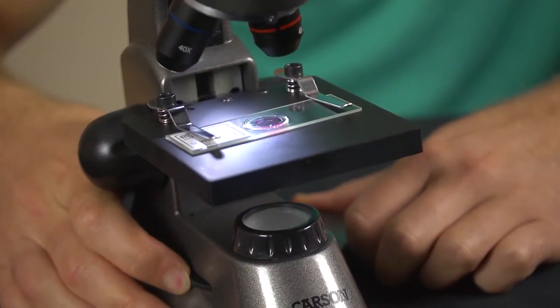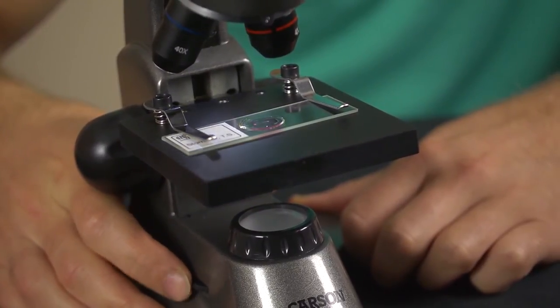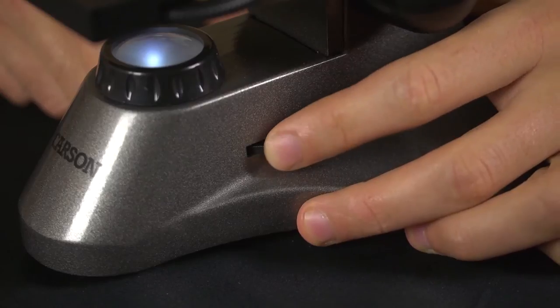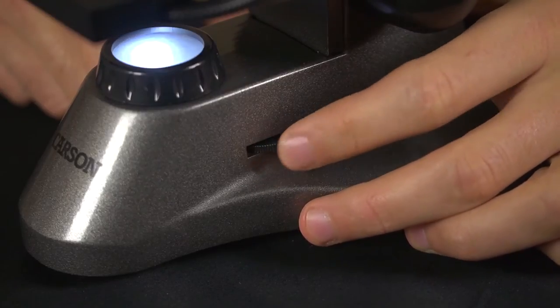One light comes from above the stage and acts as a reflective light source. The other comes from directly underneath the stage and is a transmitted light source. This is what helps you see through transparent organisms.